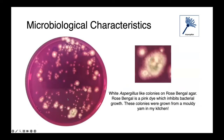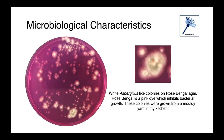In this image here, you can see some white Aspergillus-like colonies growing on rose bengal agar. Rose bengal is a pink dye which inhibits the growth of bacteria, allowing us to selectively culture fungi. Interestingly, these colonies were grown from a moldy yam — so Aspergillus is ubiquitous; it's in soil and in decomposing matter. Aspergillus fumigatus is commonly found in overheated or spoiled hay, and this may be how some of our agricultural animals become exposed.